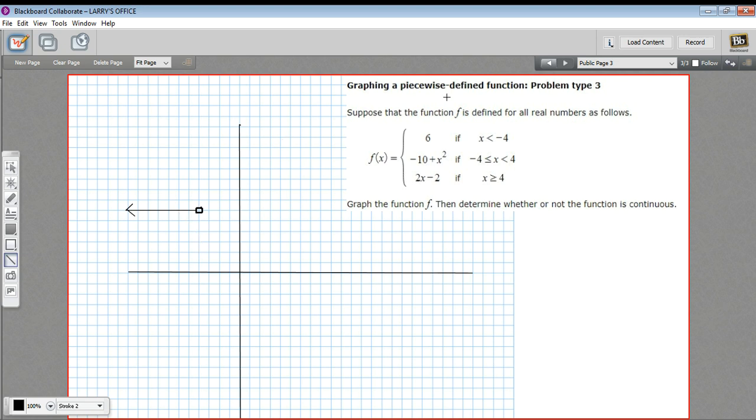Okay, so that is this chunk. f(x) is 6 if x is less than negative 4. Let's move on to the next chunk. This is a little more complicated, and it's between negative 4. Actually, it includes negative 4 and 4.